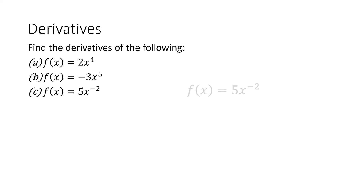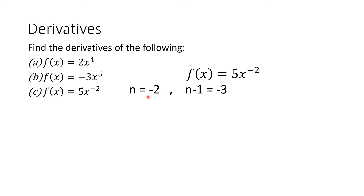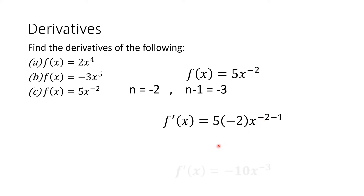Lastly, for f(x) = 5x raised to −2, take note that our n is −2, and so n minus 1 equals −3. In f prime of x, the coefficient 5 is multiplied by −2, the exponent, and x is now raised to n minus 1, which is −2 minus 1. So the derivative f prime of x = −10x raised to −3.